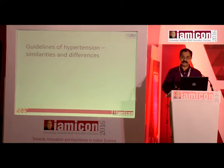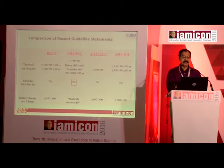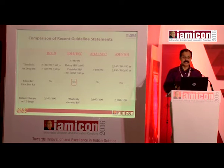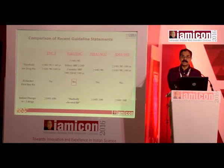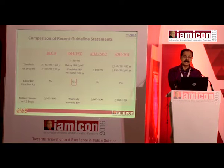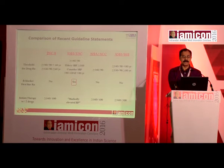Multiple hypertension guidelines exist: JNC-8, European (ESC/ESH), AHA/ACC, and ASH. Most set the treatment threshold at 140/90, but JNC-8 controversially raised it to 150/90 for people above 60 years. The ASH and European guidelines prefer to maintain below 140/90 up to age 80, reserving the higher threshold only for those above 80 years. There remains uncertainty about the optimal target for the 60–80 age group.